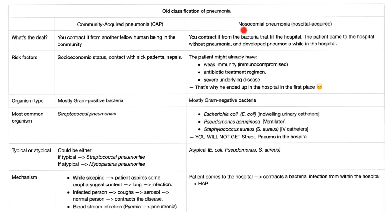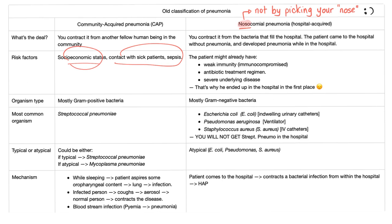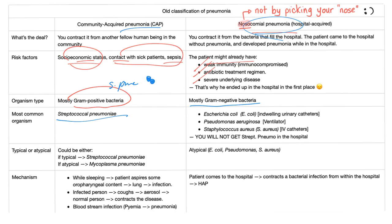Another archaic classification of pneumonia: community acquired versus nosocomial or hospital acquired. In community acquired, you contract it from a fellow member of the community — commoner in low socioeconomic status, contact with sick patients, sepsis, etc. In nosocomial, the patient came to the hospital without pneumonia and developed it while in the hospital — due to weak immunity, being on antibiotics, or having severe underlying disease. The organism in community acquired is mostly gram-positive bacteria, specifically Strep pneumo or pneumococci, which are gram-positive diplococci that look like a lancet. In hospital acquired, they are mostly gram-negative bacteria.